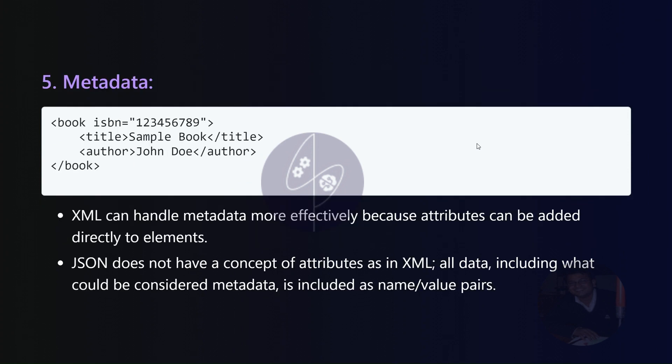Metadata. XML exhibits effectiveness in handling metadata by allowing attributes to be directly added to elements. JSON lacks a dedicated attribute concept, incorporating all data, including potential metadata, as name/value pairs.